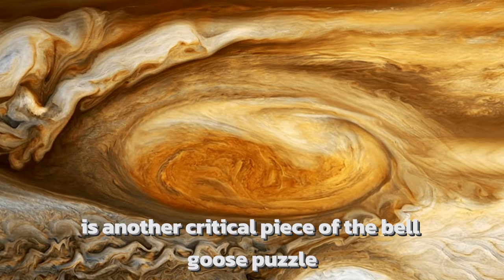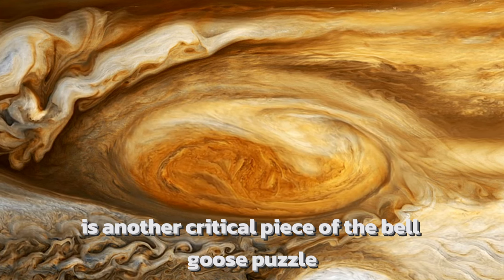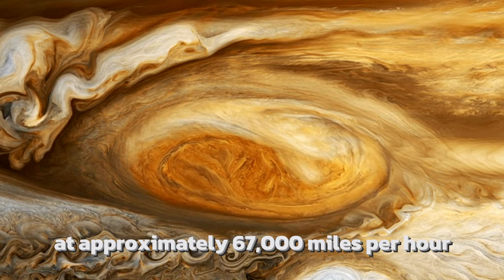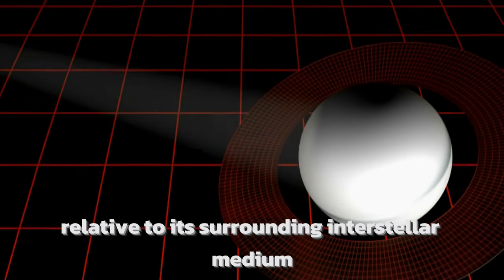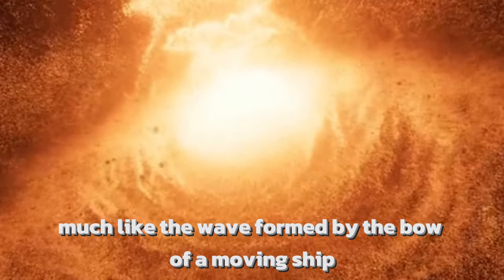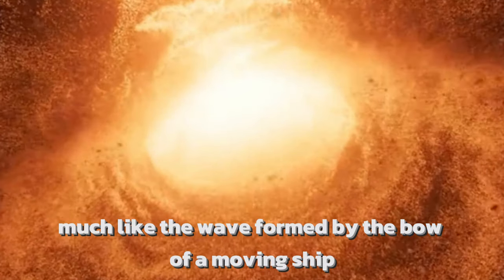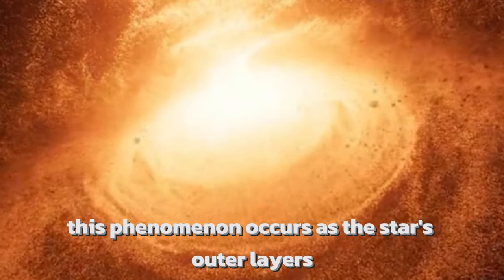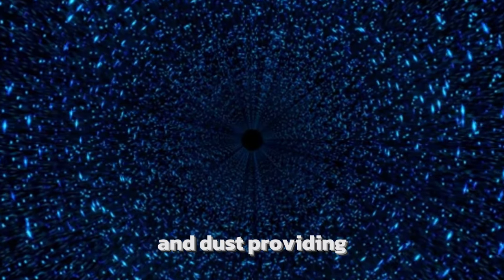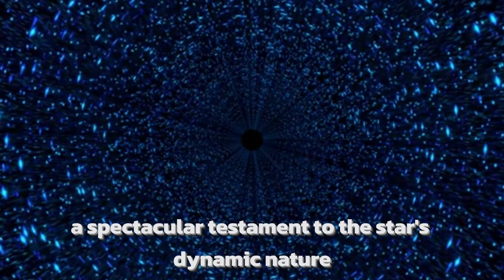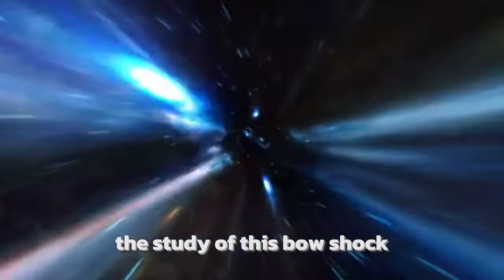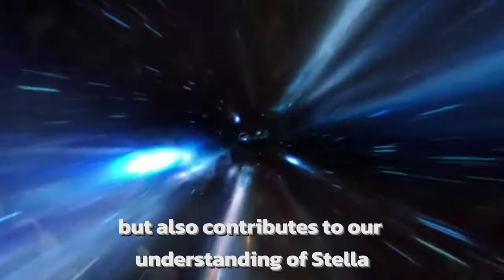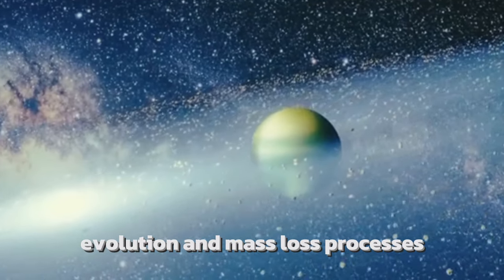The concept of bow shock is another critical piece of the Betelgeuse puzzle. As this colossal star hurtles through space at approximately 67,000 mph relative to its surrounding interstellar medium, it creates a bow shock, much like the wave formed by the bow of a moving ship. This phenomenon occurs as the star's outer layers interact with the interstellar gases and dust, providing a spectacular testament to the star's dynamic nature and its interaction with the cosmic environment. The study of this bow shock not only informs us about Betelgeuse's current state, but also contributes to our understanding of stellar evolution and mass loss processes.